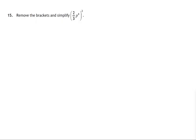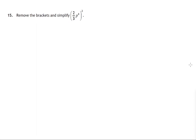Hi, Mr. Corsi here. In this question we're asked to remove the brackets and simplify this expression. There are several ways of doing that. I think the simplest way is to just see what does squaring something mean — what does it mean when we're taking two-thirds of p to the 4 and squaring it?